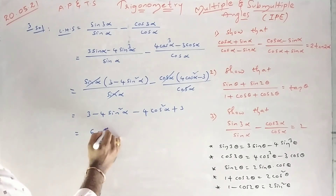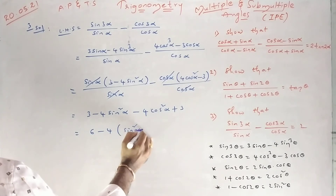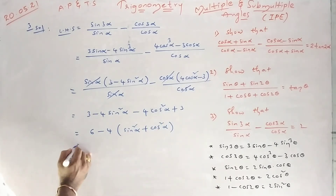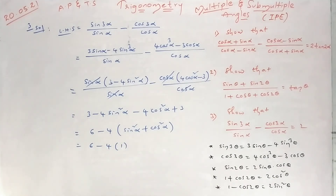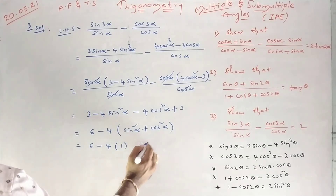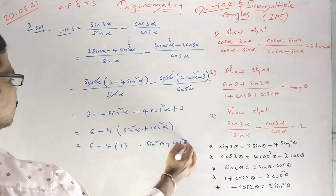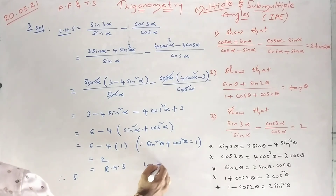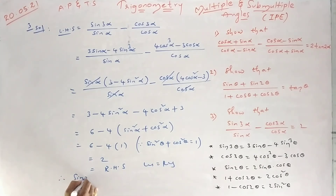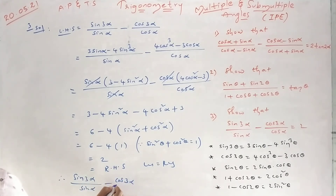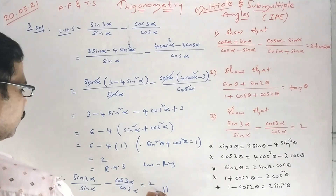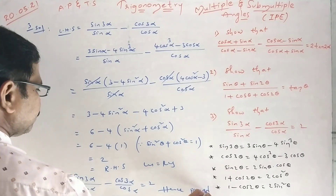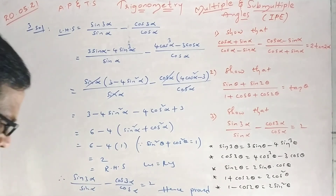3 plus 3 is 6, minus 4 taken common from sin²α + cos²α. We know from the first identity that sin²θ + cos²θ equals 1. So 6 minus 4 times 1 equals 2, which is RHS. Therefore LHS equals RHS. Hence, sin3α/sinα minus cos3α/cosα equals 2. Hence proved. Hope it is clear. Thank you.